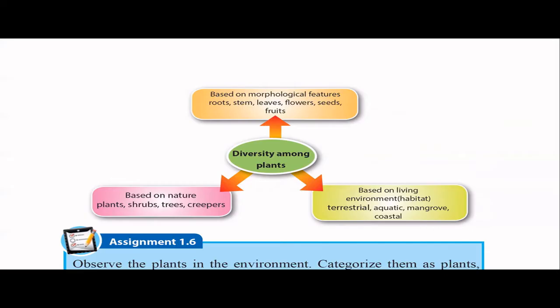If you think about the stem — a coconut tree is unbranched, it has no branches, only leaves. But a mango tree has a branched stem, meaning it has branches growing from the stem.